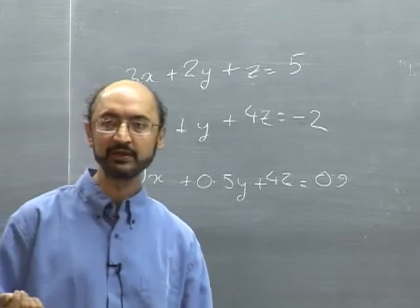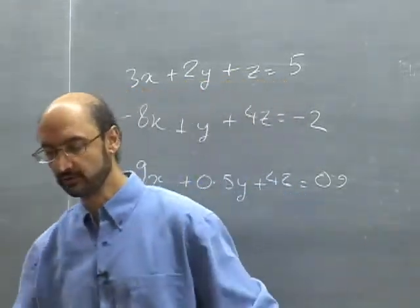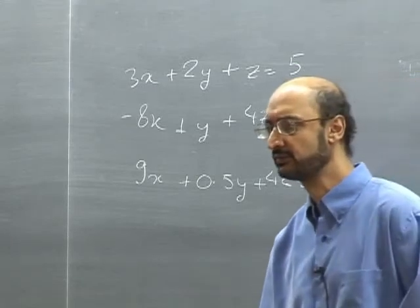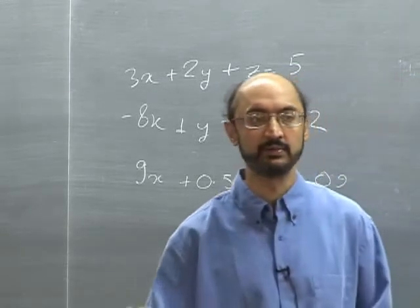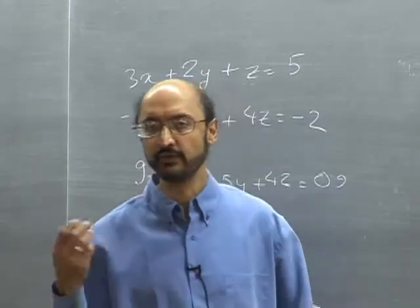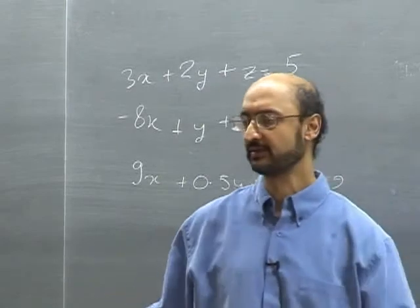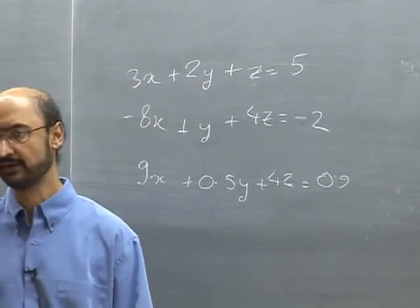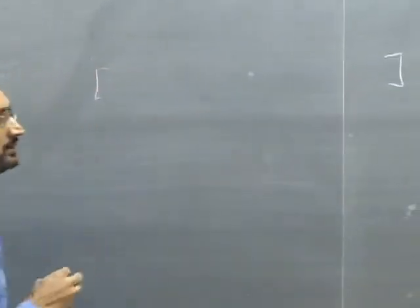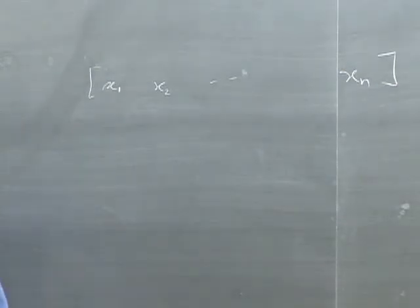A typical example would be scheduling. What we're trying to do is figure out which classes should be assigned to which classrooms for a particular term in the university. We have a bunch of classes and a bunch of classrooms, with the constraint that every classroom should have only one class at any point in time, and every class must meet at least once a week.